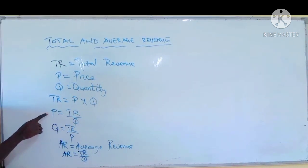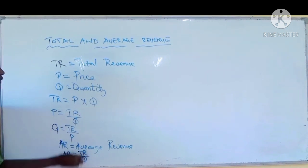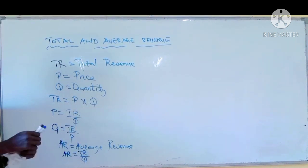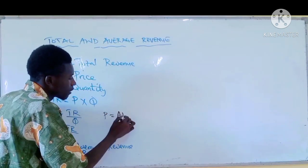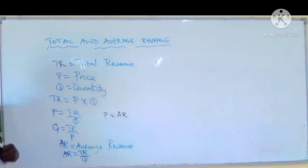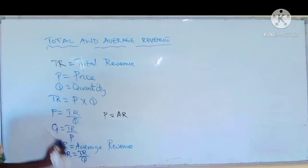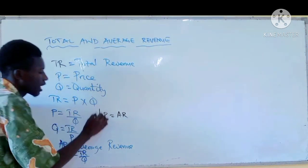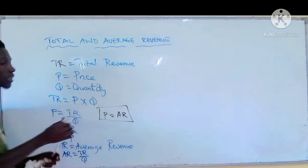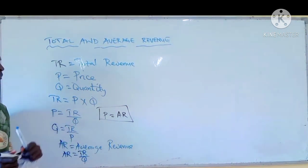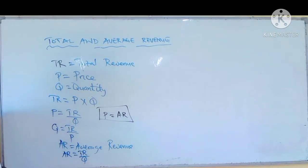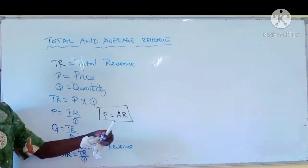The average revenue and the price have the same formula. That's why in most cases, price is the same as average revenue — they all have the same format. So if you look at an example in a question where you are supposed to find the average or the total revenue: